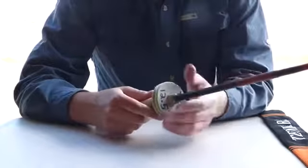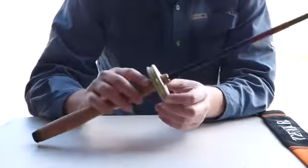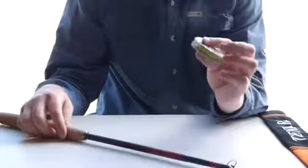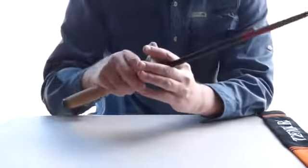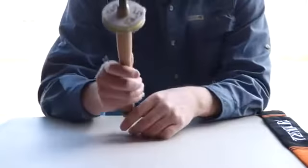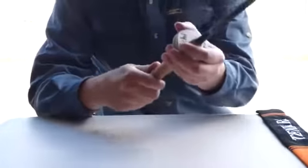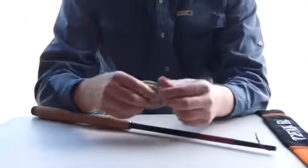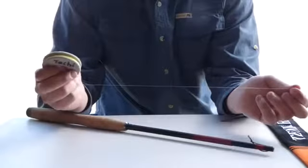Next we're going to talk about the tenkara line. Our starter kits come with a foam wheel that holds your line. It's really nice because I can take it all pre-rigged to the water. Pull this off, pull my line off and I'm fishing.